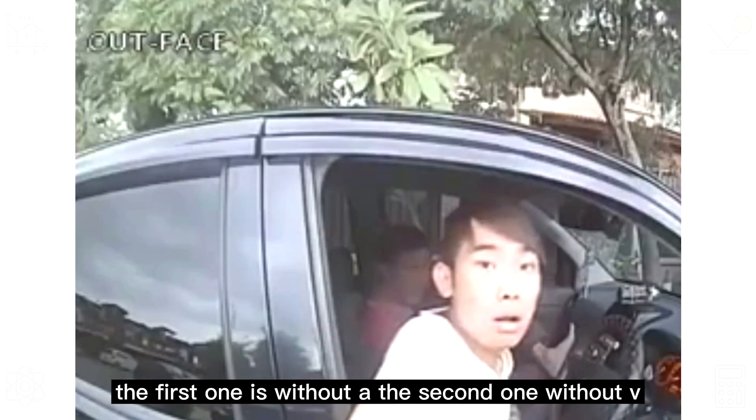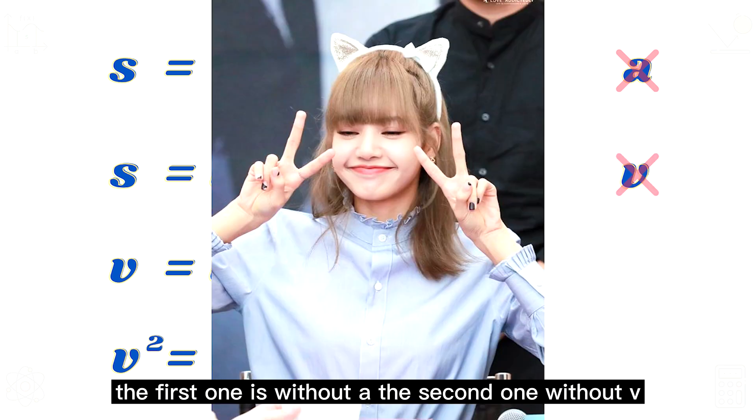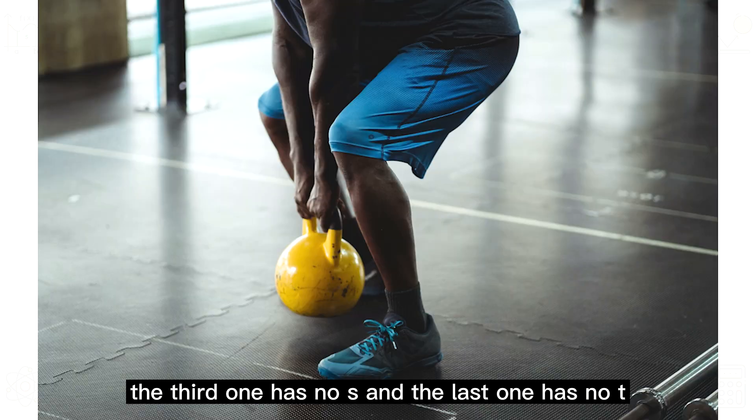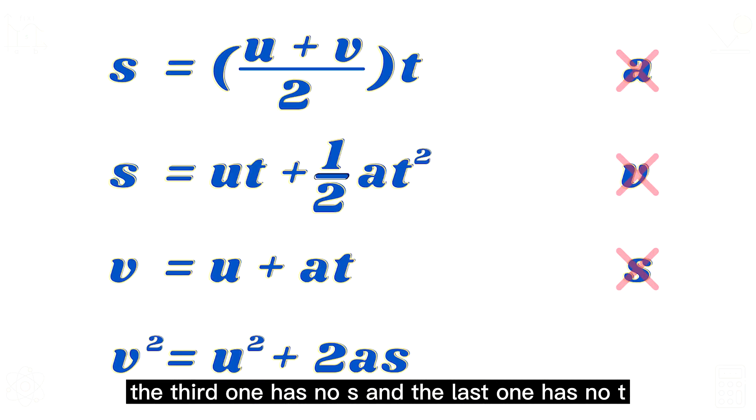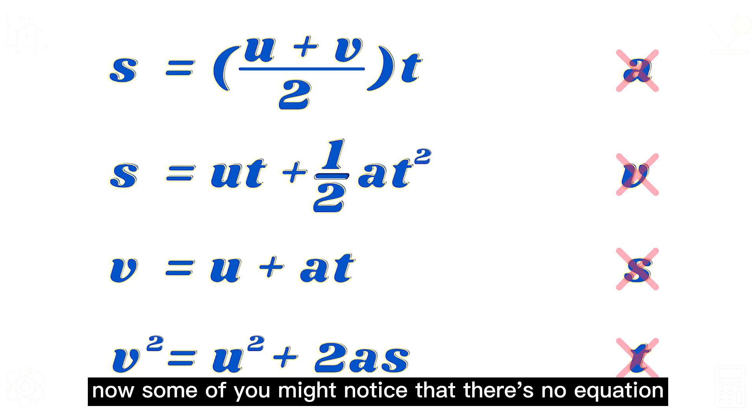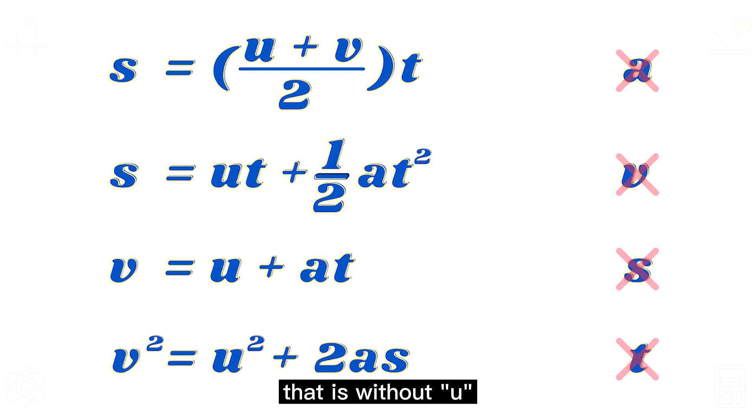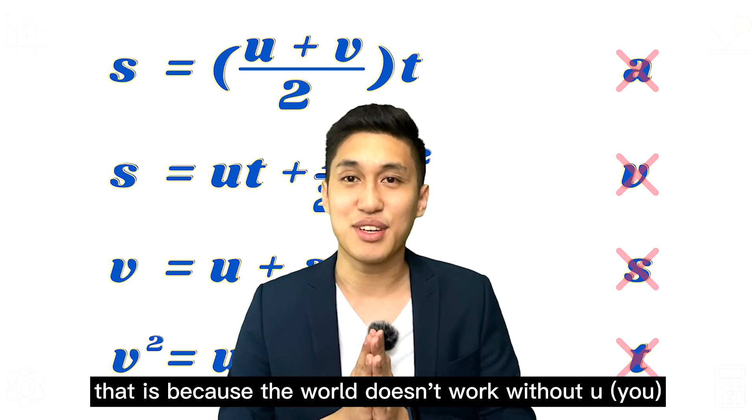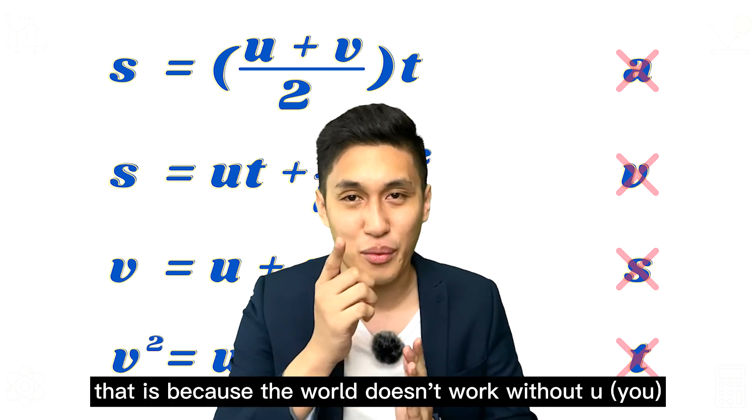The first one is without A, the second one without V, the third one has no S, and the last one has no T. Now, some of you might notice that there is no equation that is without U. That is because the world doesn't work without you.